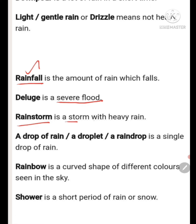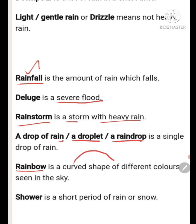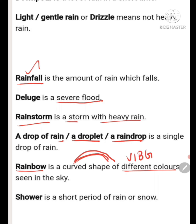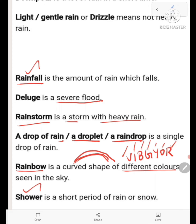Rainstorm is a storm with heavy rain. A raindrop or droplet is a single drop of rain. Rainbow is a curved shape of different colors seen in the sky — V for Violet, I for Indigo, B for Blue, G for Green, Y for Yellow, O for Orange, R for Red. Shower is a short period of rain or snow — a little bit of rain.